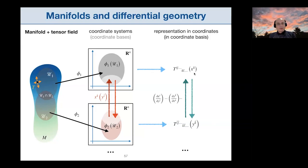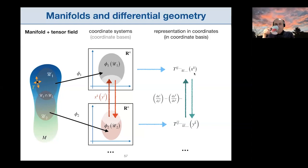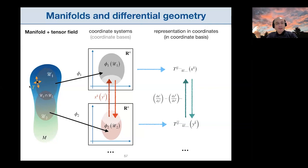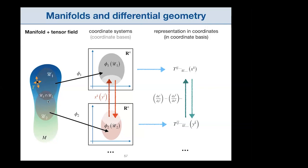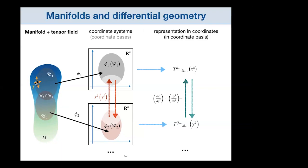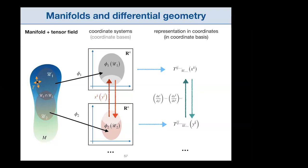Student question: U2 doesn't appear to cover the tensor point T in the manifold. The answer is that T is a tensor field existing everywhere or over a large region of the manifold. If the point p were defined only in U1's region, we wouldn't use U2 for it — there would be infinitely many other charts available. The picture represents a whole field, not just a tensor at one point.